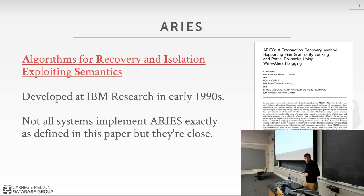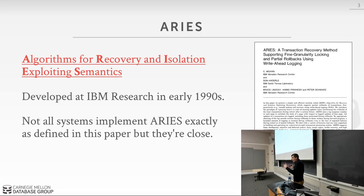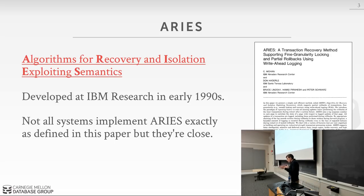ARIES was developed at IBM Research in the late 1980s and early 1990s by a tech fellow at IBM called Mohan — he simply goes by Mohan. This paper is about 70 pages and very dense. If you want to fall asleep, read it — but it's also amazing because it lays down the exact steps you need to make sure your database can recover after a crash, including all possible corner cases.